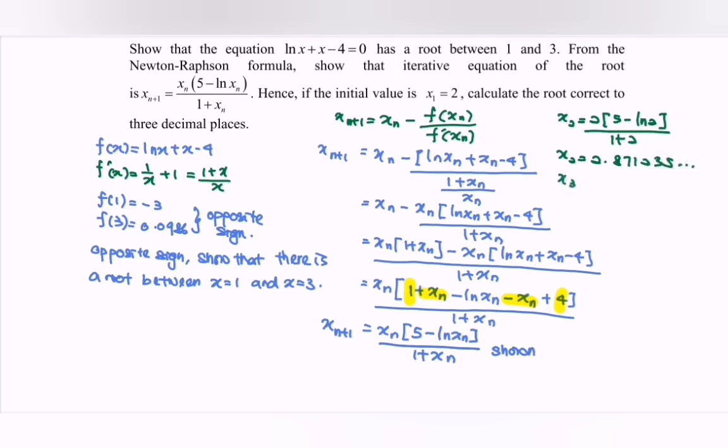Continuing the iterations, x_3 = 2.926136, x_4 = 2.926271, and x_5 = 2.926271.